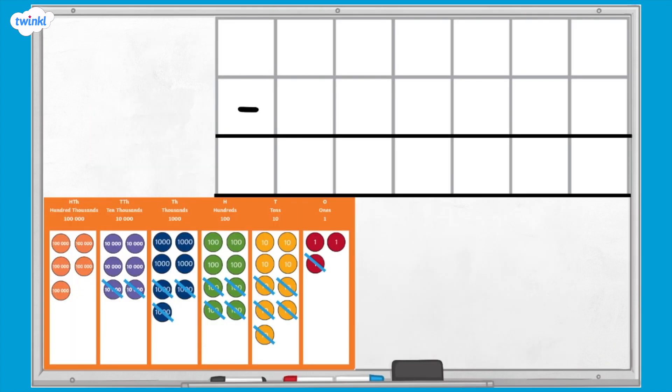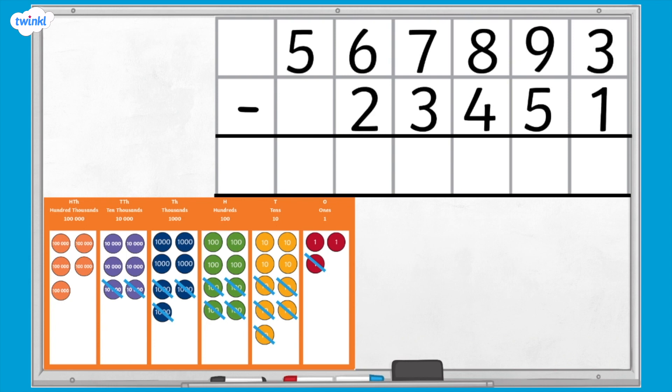Here I have an empty column subtraction template. I'm going to write my subtraction in the template, making sure that I write each number in the correct place value column. We're going to begin by subtracting the ones column. What are three ones subtract one one? Three ones subtract one one equals two ones.